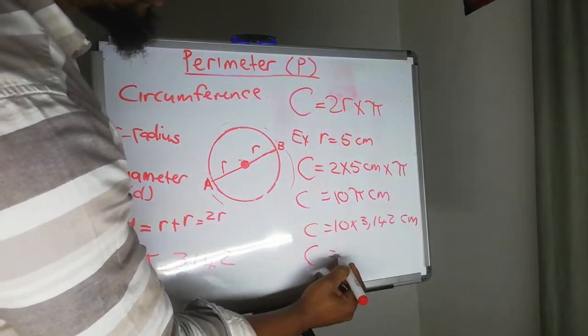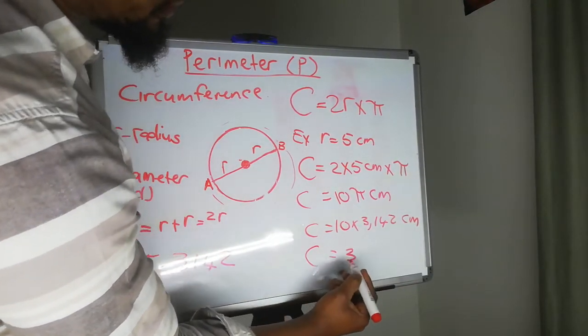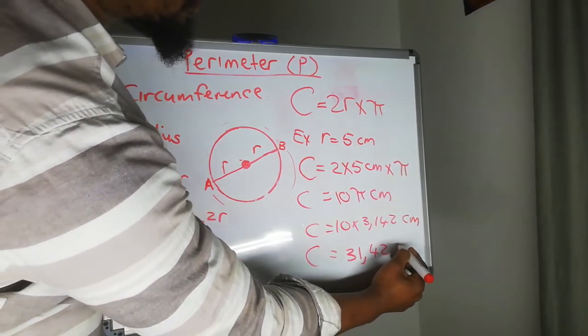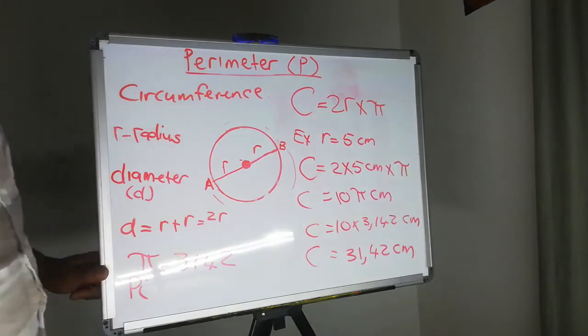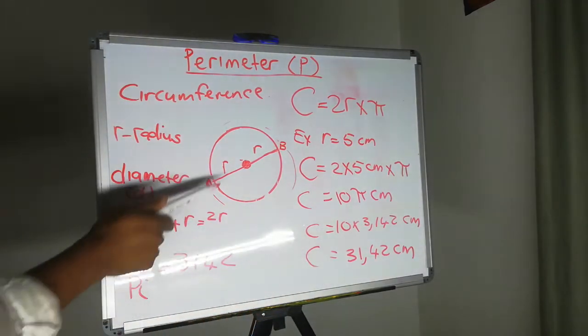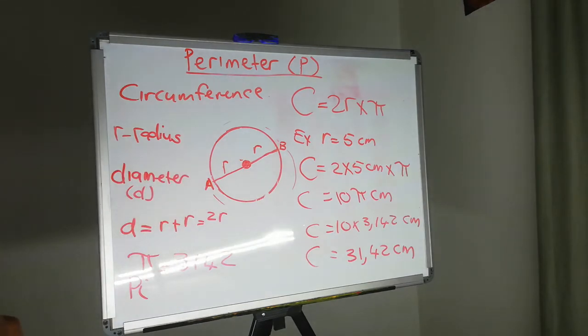And C is equal to 31.42 centimeters. And that will be the circumference of our circle.